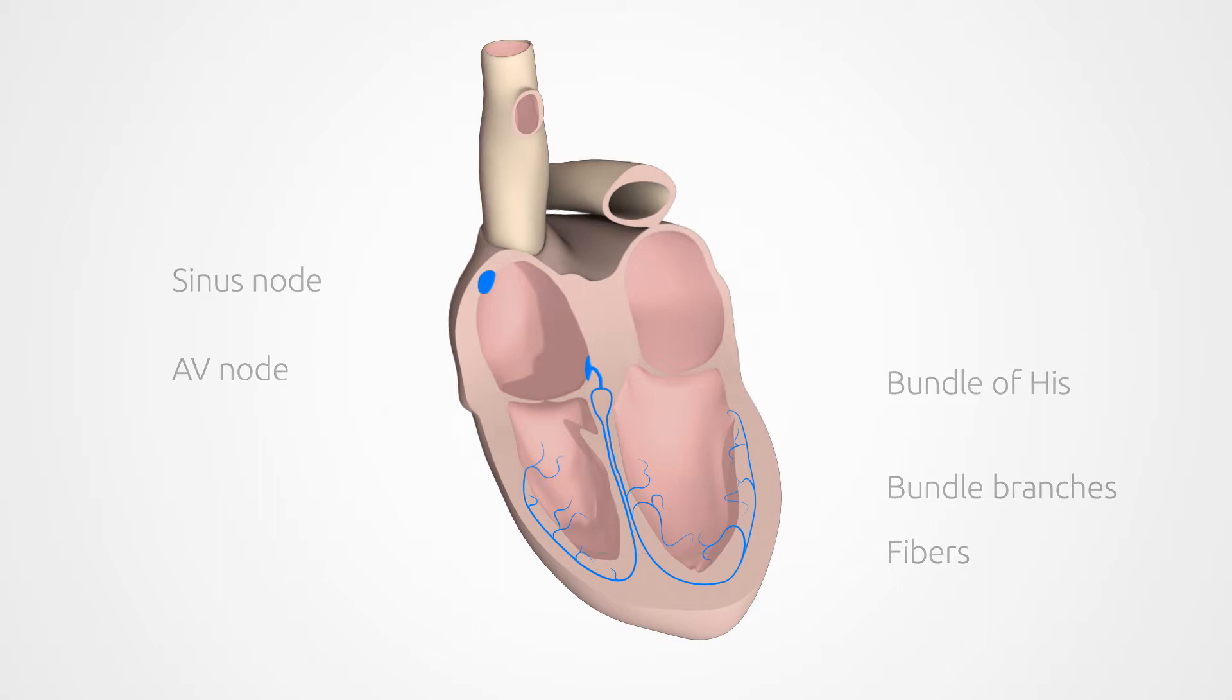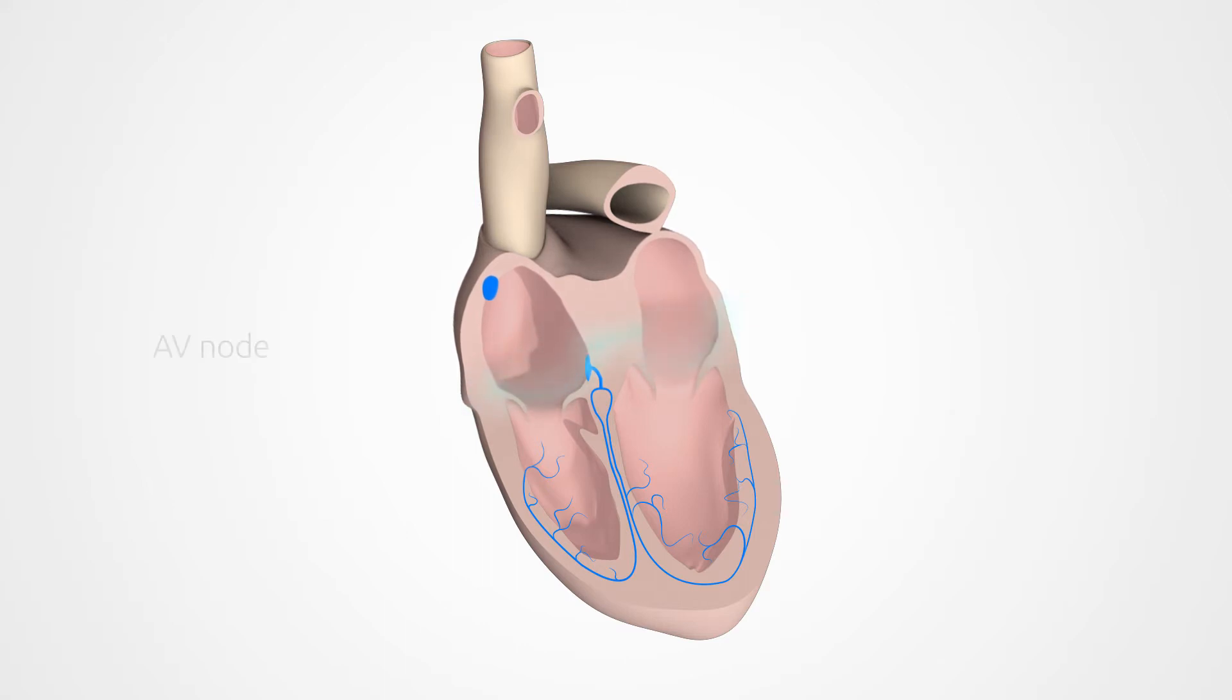Let's look at how signals travel through the heart. The sinus node generates an electrical signal that spreads to both atria. The signal reaches the AV node and is passed on to the bundle of His and then to the bundle branches.